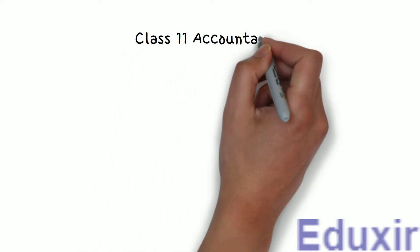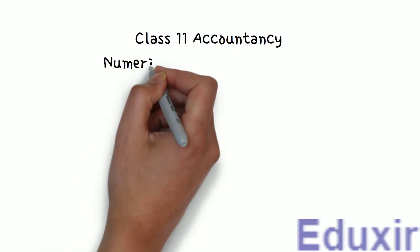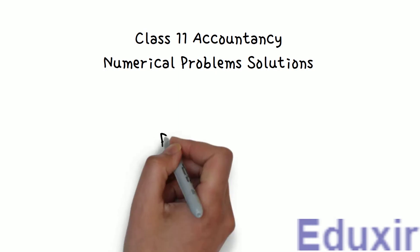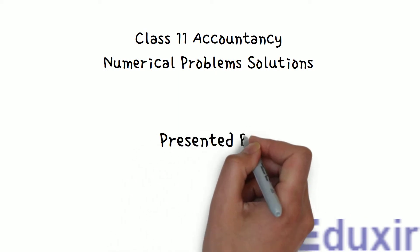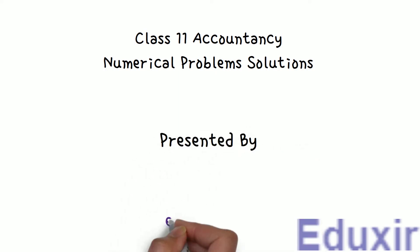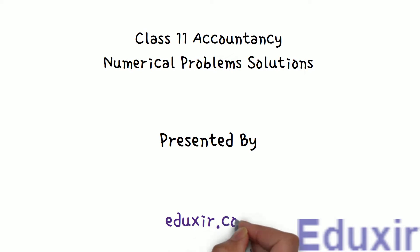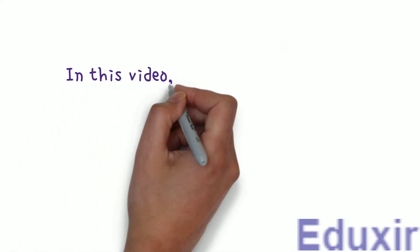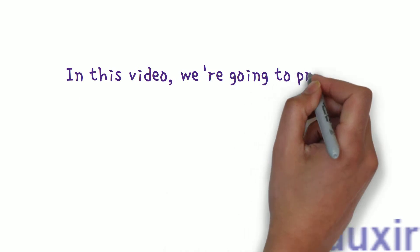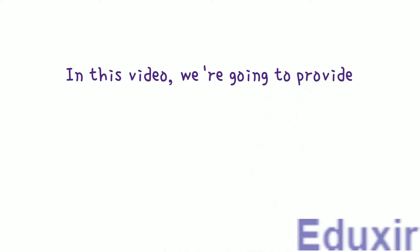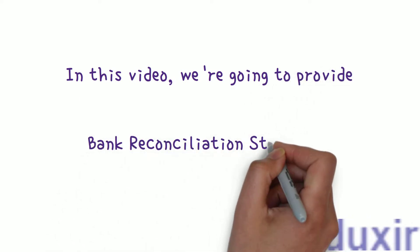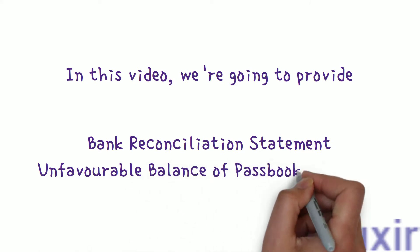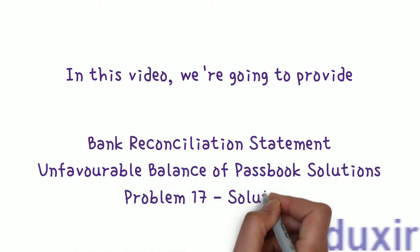Class 11 Accountancy Numerical Problems Solutions, presented by eduxit.com. In this video, we are going to provide Bank Reconciliation Statement — Unfavorable Balance of Passbook Solutions — Problem 17 Solution.